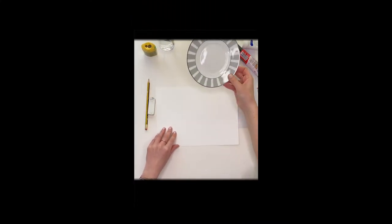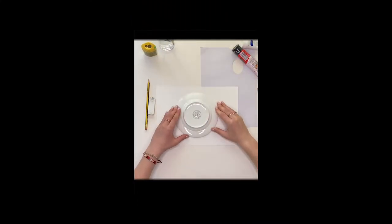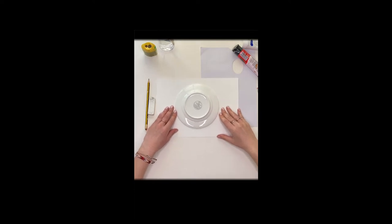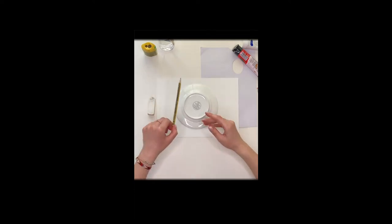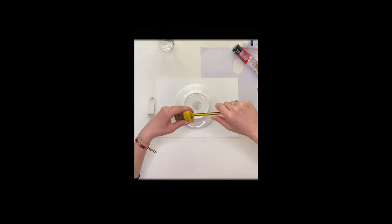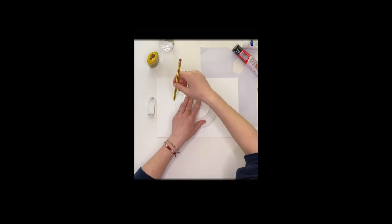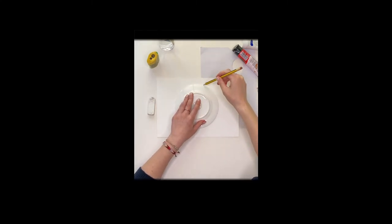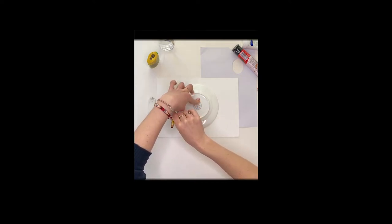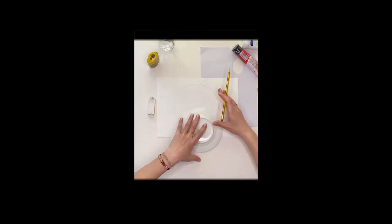Take your plate and place it upside down on the piece of paper. Make sure your pencil is nice and sharp. Sharpen your pencil. And then draw around the plate, making sure you go all the way around the plate so that you're left with a circle on your piece of paper.